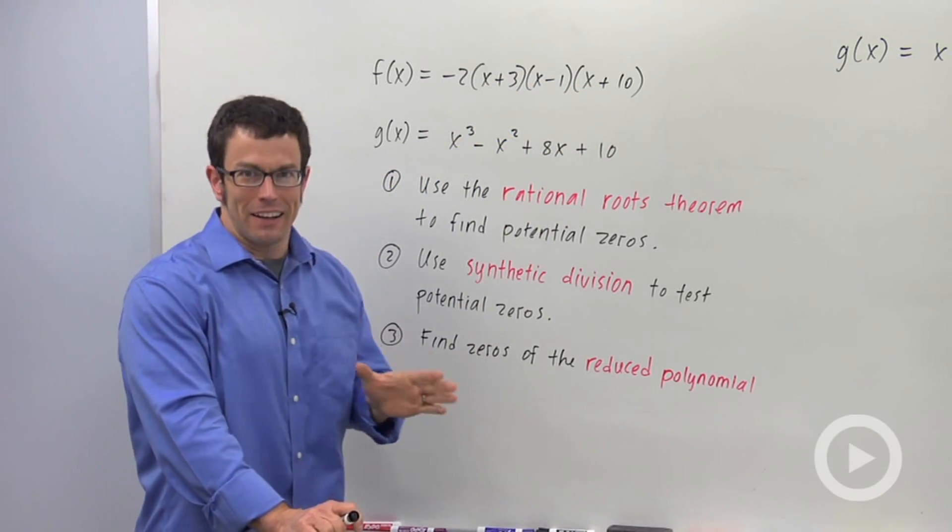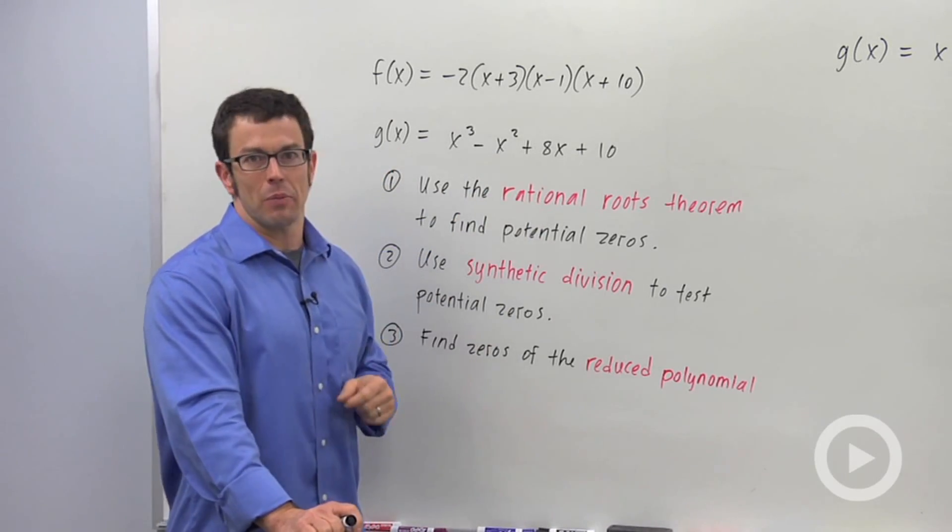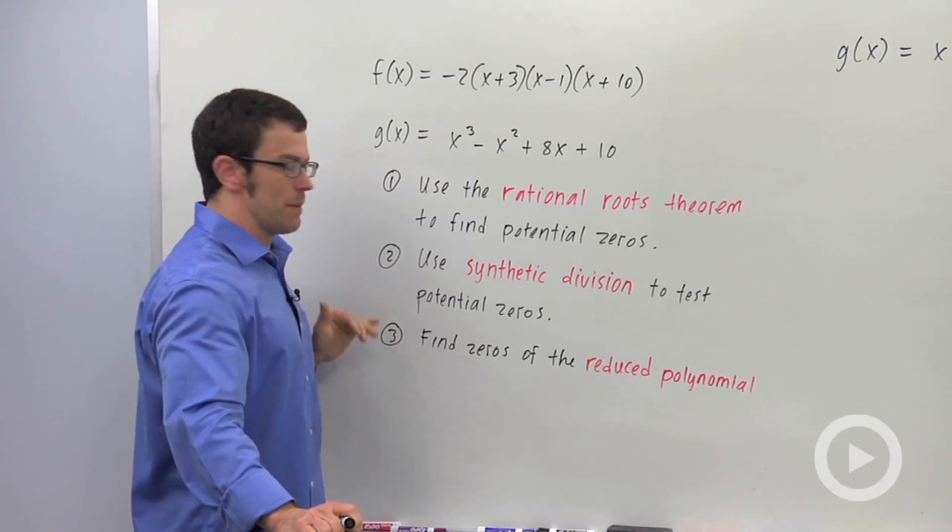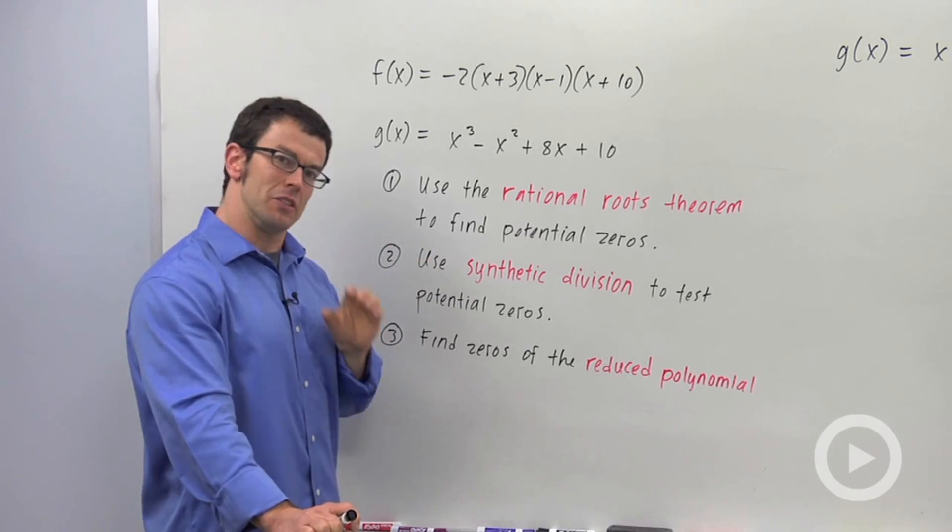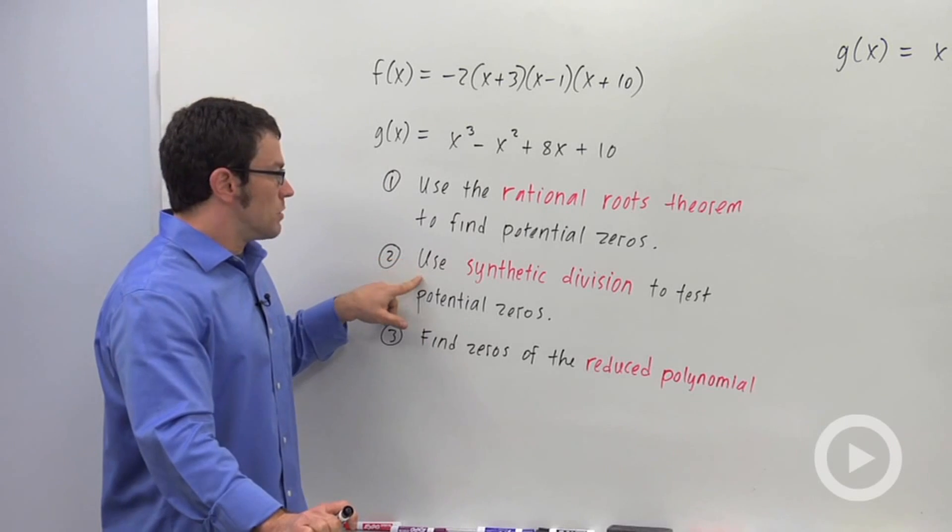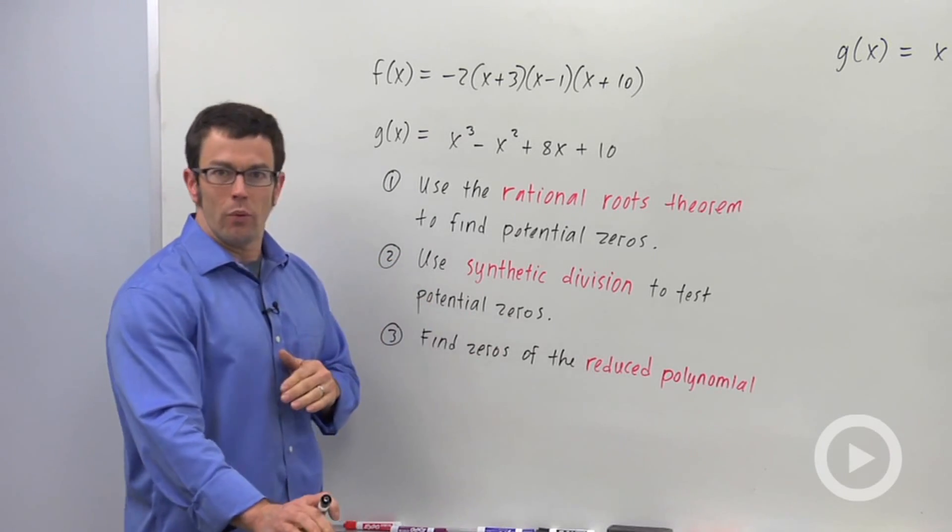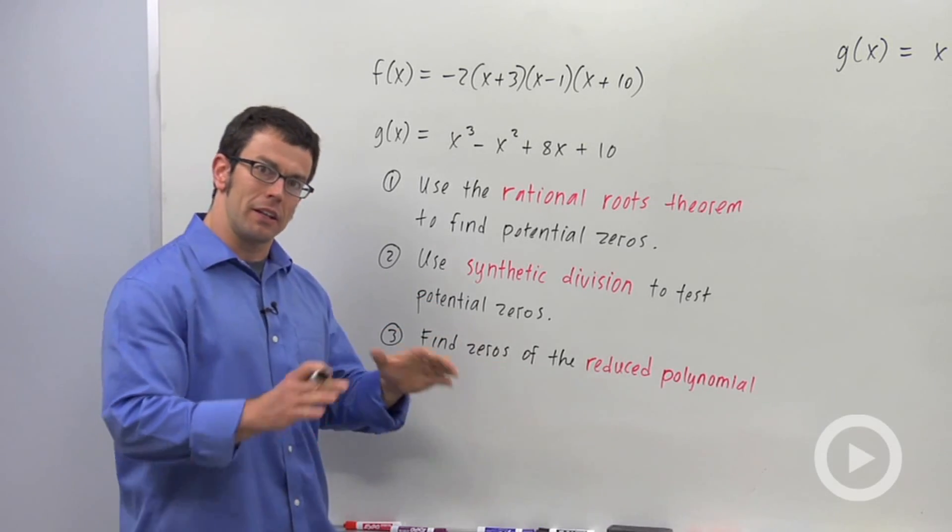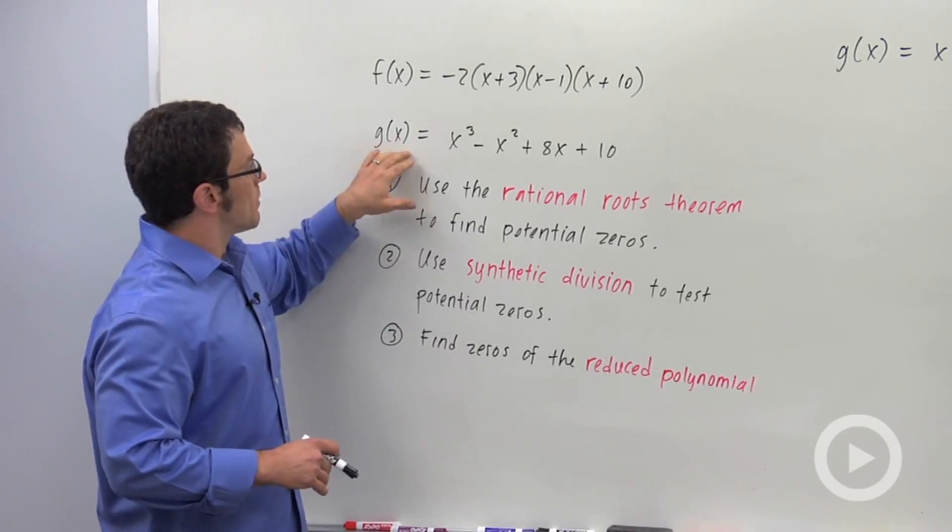So you're generally not going to get a problem this easy. What about g of x, which is not factored? This is the kind of problem you'll see. Find the zeros of g of x. Well, there are generally three steps we have to think about. First, use the rational roots theorem to find potential zeros. These are potential zeros. They don't necessarily work, but we have to check them. And we use synthetic division to test the potential zeros. And finally, we'll factor out whatever factor corresponds to the zero, and we'll get a reduced polynomial that'll contain the rest of the zeros.